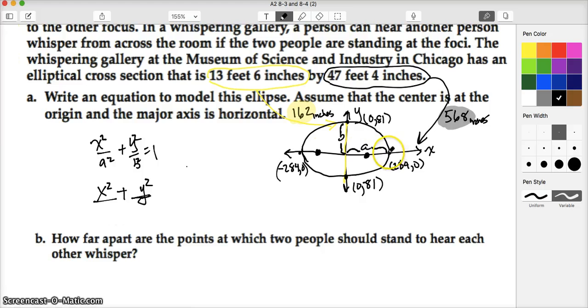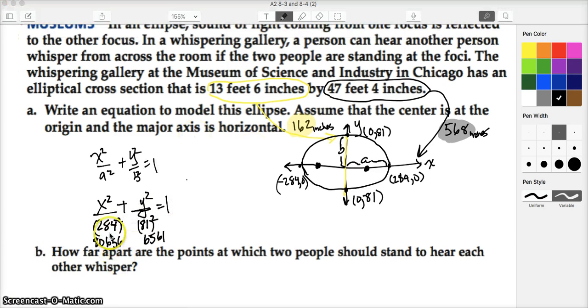So I'm going to write it like that. a squared is 284 squared, and I'm going to be lazy and actually not do that. Just write it like that for now. And b squared is going to be 81 squared. And then whatever those values are, I'll calculate them. Okay, so we got 80,656 and 6,561. That would be the denominators. I know I could have done it in feet, but I thought the decimals were getting really kind of funky. Wouldn't be that big a deal, but these are in inches. And so this would be the equation that I would use to model that particular room.